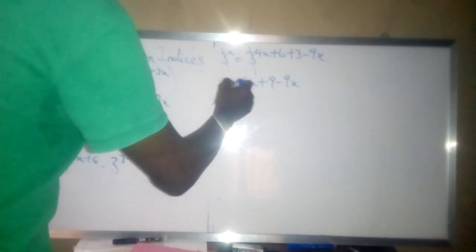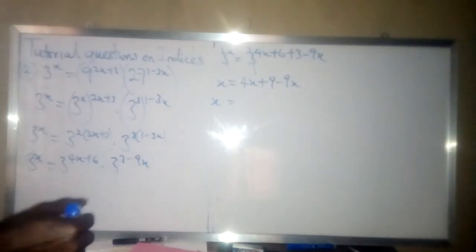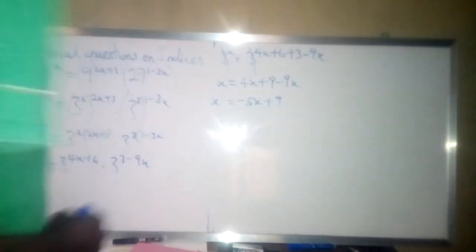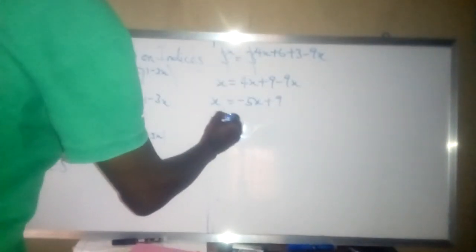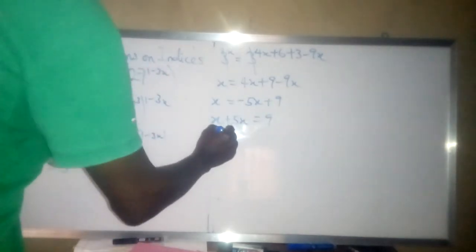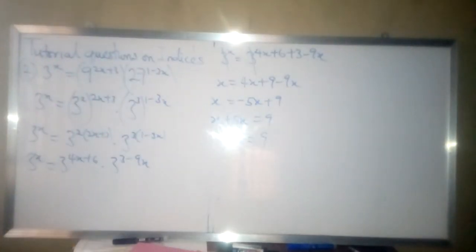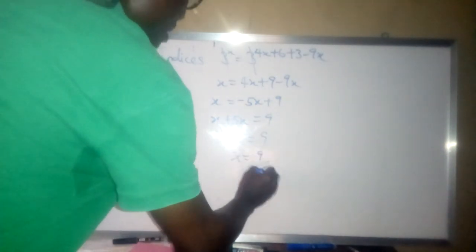x is equal to, you can say 4x minus 9x, that's minus 5x plus 9. Now bringing minus 5x here because plus 5x, is equal to 9. So you have 6x is equal to 9. So how do we now get x? We divide both sides by 6. So we have x is equal to 9 over 6.